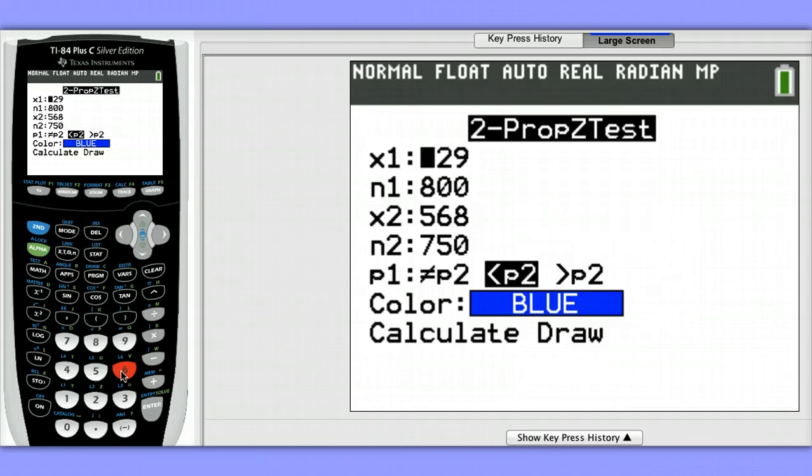In the first school, they did a simple random sample of 80 students and found that 19 had not eaten breakfast. So x1 is 19. That's the number of successes in that first sample of 80.